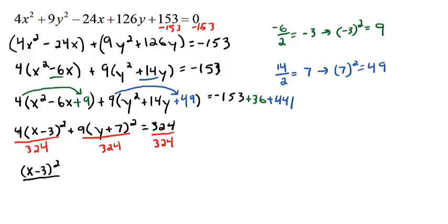Okay, 4 over 324 ends up being 1 over 81, because 324 divided by 4 is 81. Then we've got plus 9 over 324 ends up being 1 over 36, because 9 divided into 324 is 36. And then of course this all equals 1, and this is going to be our final answer.